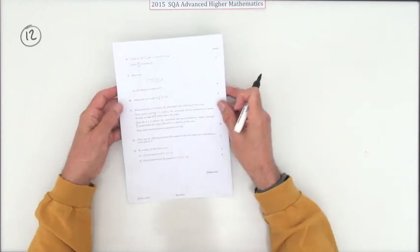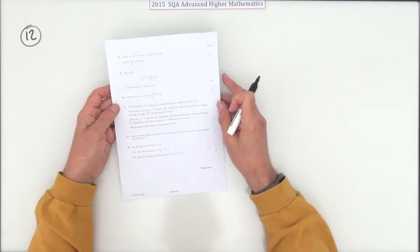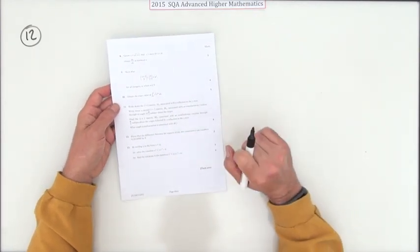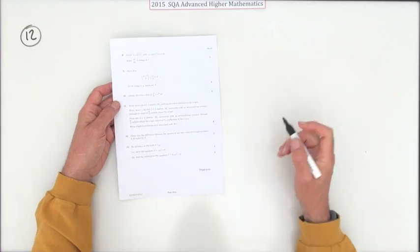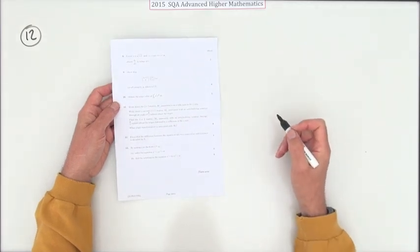Number 12 from the 2015 advanced exam — this will be a proof for three marks. Prove that the difference between the squares of any two consecutive odd numbers is divisible by eight.